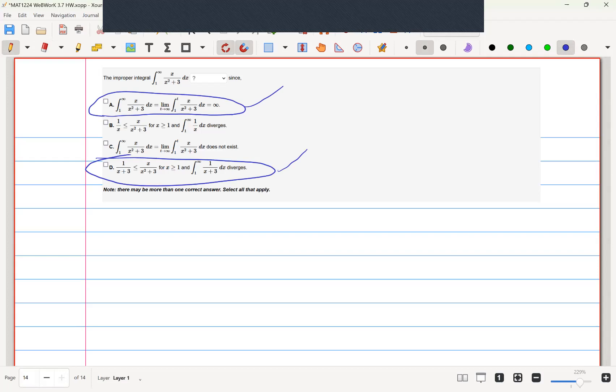Using comparison tests, we'll compare x over x squared plus 3 with x over x squared for x greater than or equal to 1.